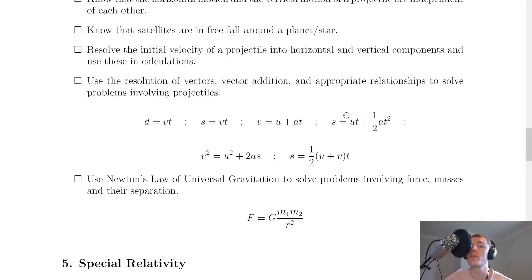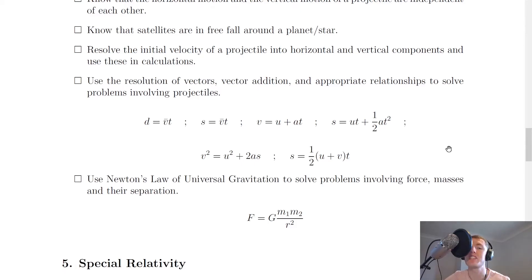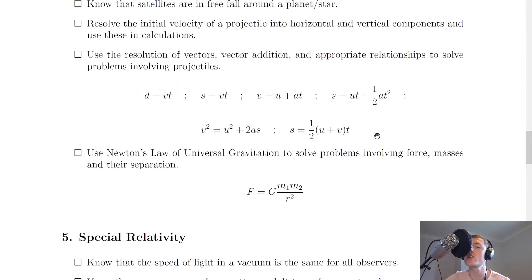It says to use vector addition and appropriate relationships to solve problems involving projectiles — you may have to add two velocity vectors together nose to tail to get a resultant velocity vector. These are just the same equations of motion from the first half of the ODU topic. Remember when dealing with projectile motion it really helps to write down SUVAT first and then use your equations of motion.